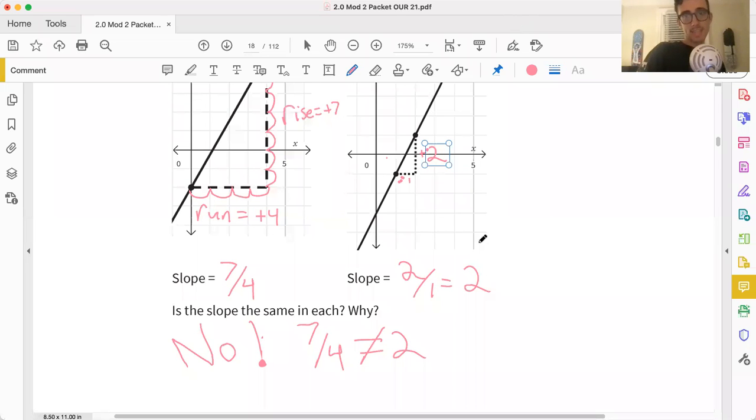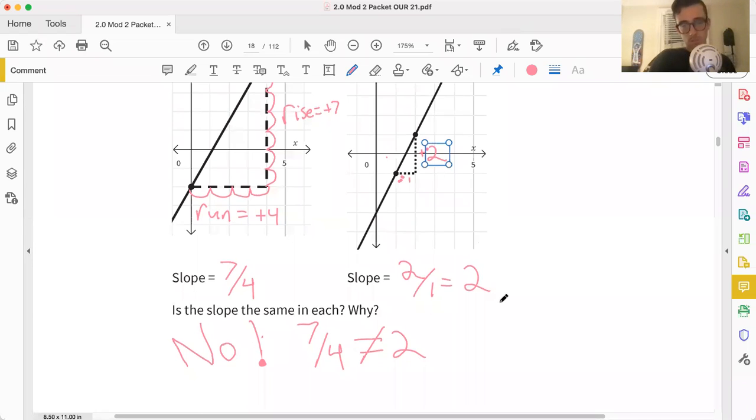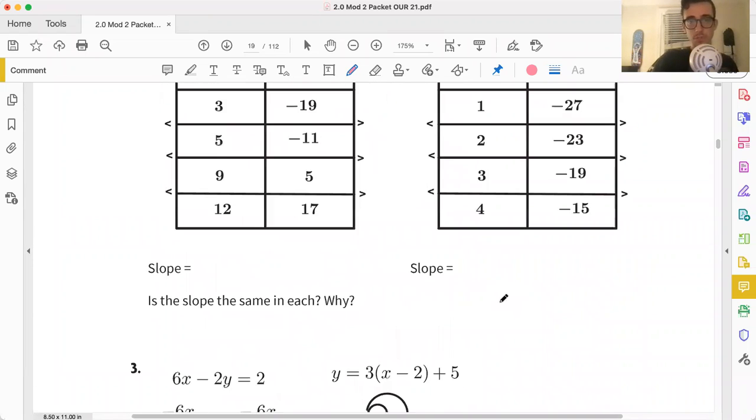So when it's all said and done, we can say that, no, the slopes are not the same. In each, 7 fourths, although close to 2, it's a quarter off. 7 fourths isn't equal to 2, so they're not equal. Pretty simple to spot.